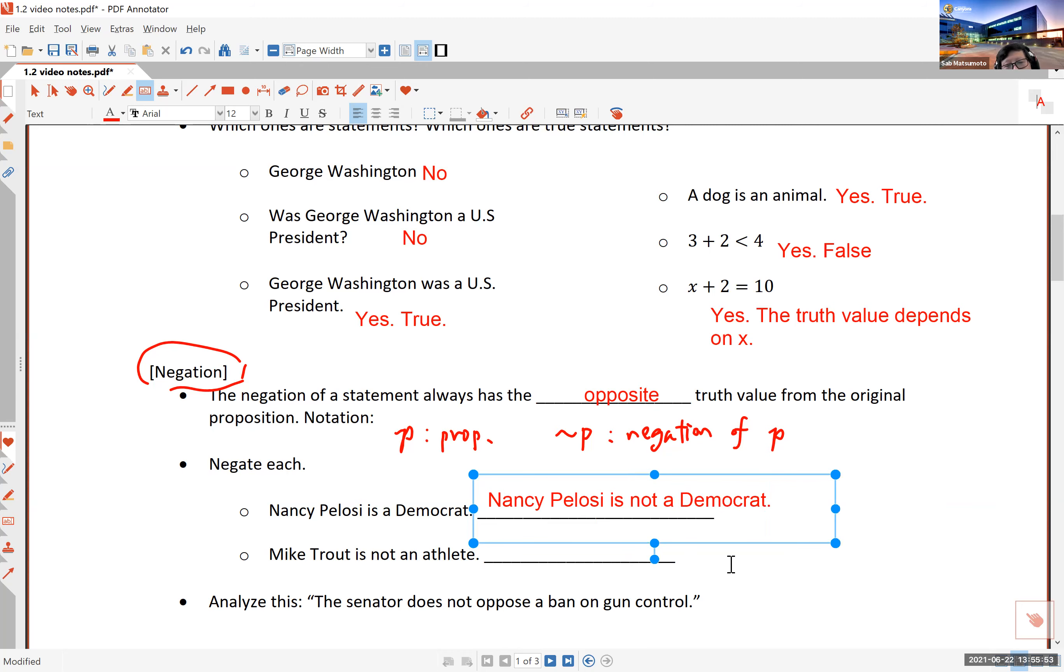Now, you do not want to say, listen carefully, you do not want to say Nancy Pelosi is a Republican. Because Democrats and Republicans, although in reality they are opposite, we have people who are neither Democrats or Republicans. And so it's possible that somebody may not be a Democrat without being a Republican. And so do the easiest thing here, which is the opposite, which is to put the negative word in this case, N-O-T, not in the appropriate place in the sentence.